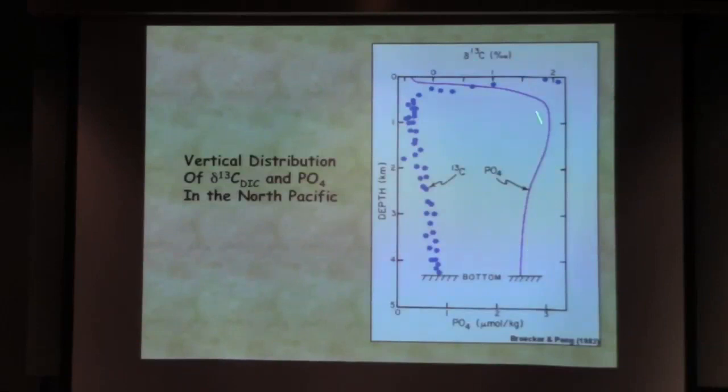What's interesting is this plot, because this is phosphate—and if I showed nitrate it would look very similar, but phosphate for a variety of reasons is the better one to show. What you see at the surface is phosphate is very low. Phytoplankton have drawn down the nutrients at the surface so that they're very low at the surface.